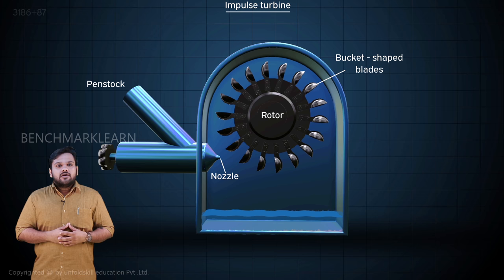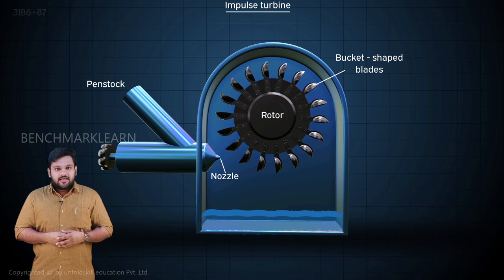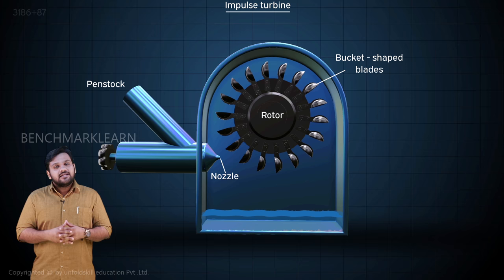The nozzle is attached to a penstock, a pipe which extends all the way up to the water reservoir, which is usually located several meters high. This water has potential energy due to its high location with respect to the nozzle. This is converted to kinetic energy, and hence a high velocity water jet comes out of the nozzle. Inside the nozzle there is a spear-like arrangement which can be loosened and tightened to control the flow rate of water.